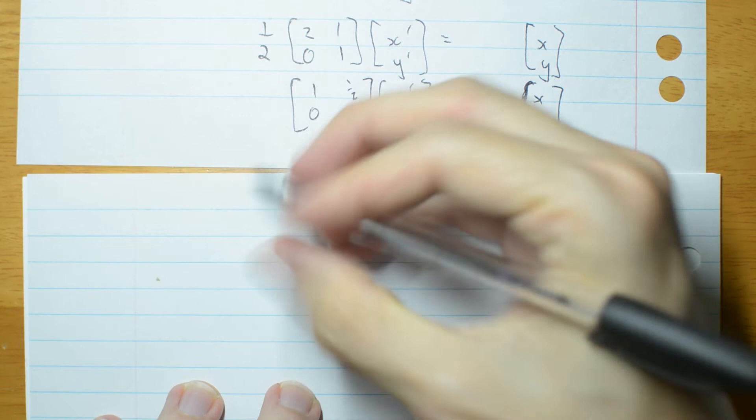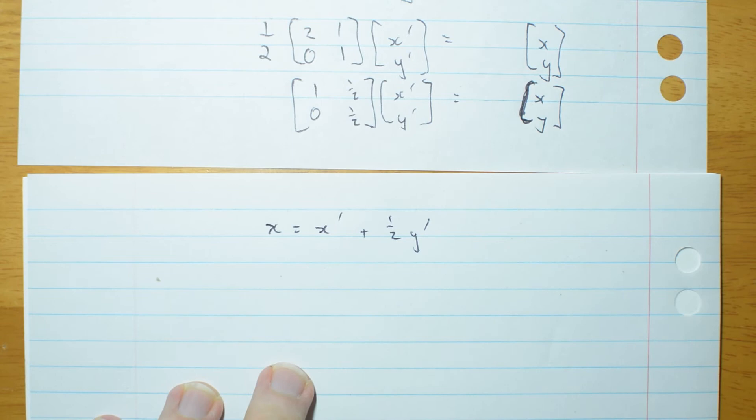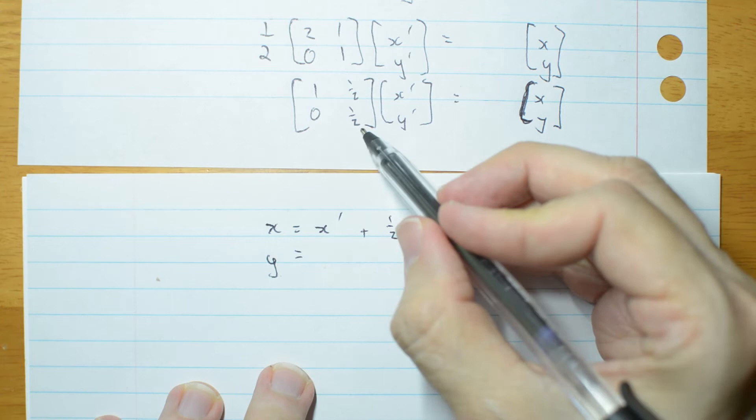So now let's read off. x is x dashed, 1x dashed, plus a half y dashed. And y, bottom row, is no x dashed, plus half y dashed.